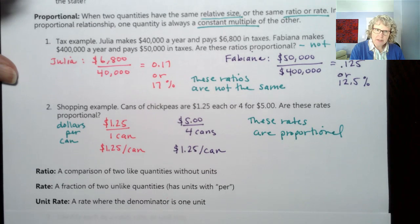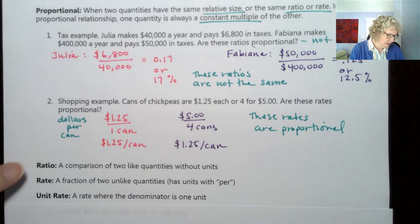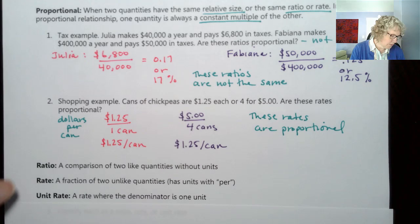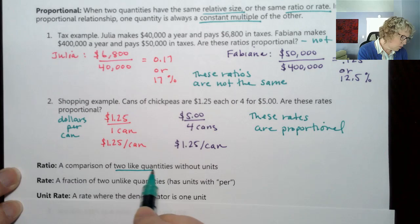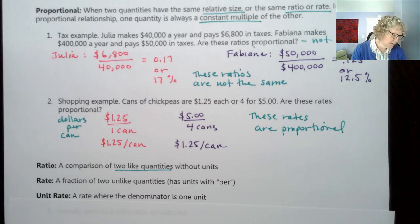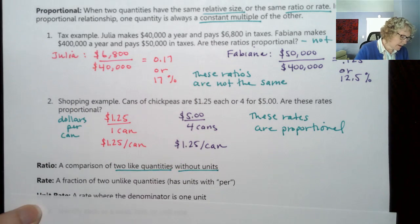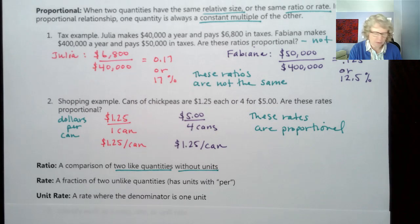So we've been talking about rates and ratios. So let's define this a little bit more, be a little bit more clear about what we're actually talking about here. Because I've said ratio and rate and maybe even unit rate. So a ratio is like what we did in the tax example. A ratio is a comparison of two like quantities. So here it's dollars and dollars. So even though it's taxes and total income, it's dollars and dollars.